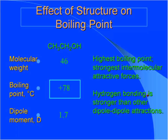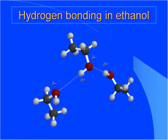Hydrogen bonding is stronger than other dipole-dipole attractions, which is why the O-H...O-H network in alcohols leads to such high boiling points.